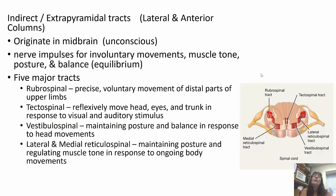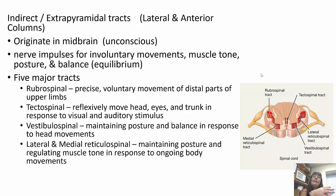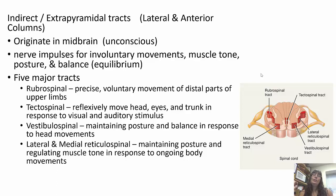The indirect, or extrapyramidal, tracts use the lateral and anterior columns and originate in the midbrain. These are unconscious — carrying impulses for involuntary movements, muscle tone, balance, equilibrium, and posture. Five major ones include: the rubrospinal (voluntary movements of distal upper limbs); tectospinal (reflexive movements of the head, eyes, and trunk in response to visual and auditory stimuli, via superior and inferior colliculi); vestibulospinal (maintaining posture and balance as the head moves); and the lateral and medial reticulospinal (maintaining posture and regulating muscle tone during ongoing movement, like walking).